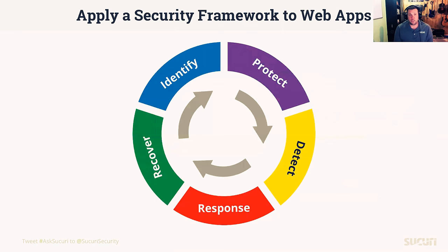Identification can also include things like pen testing — looking to identify vulnerabilities on a regular basis and investigating your weaknesses so that you can address those. When we're talking about protection, certainly patching and hardening are helpful but can be hard to manage, especially when organizations are using third-party developers, which makes it even more challenging to get patches and updates rolled out in a timely fashion.